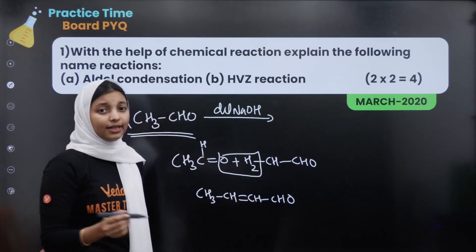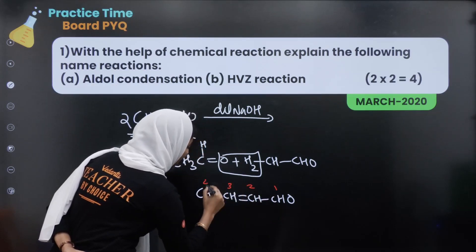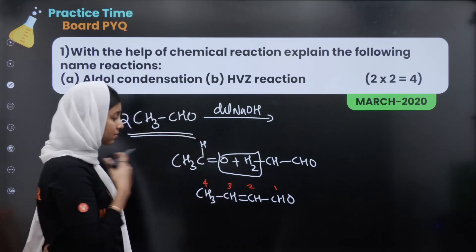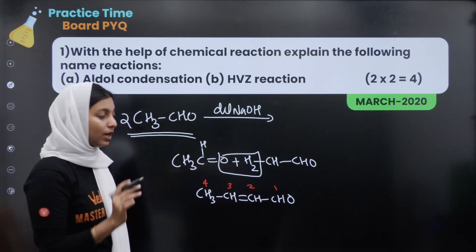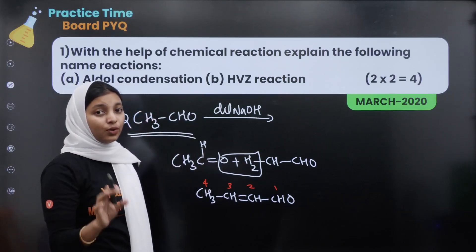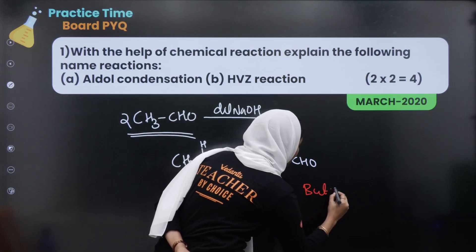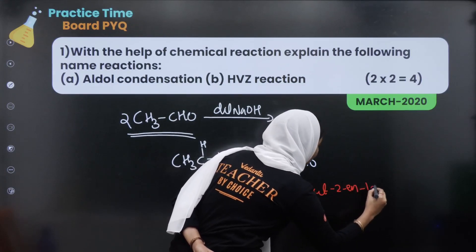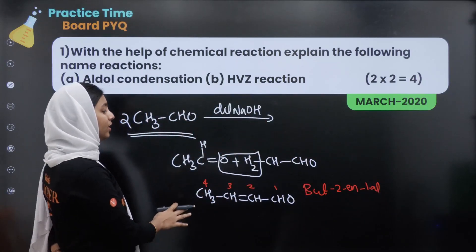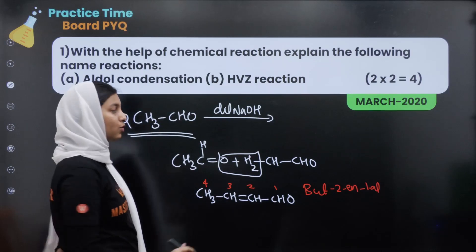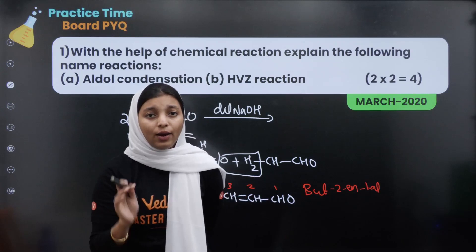I will start numbering from the CHO group: 1, 2, 3, and 4. The second carbon has a double bond. So we get but-2-en-1-al. This is self-aldol condensation, and that is the product.